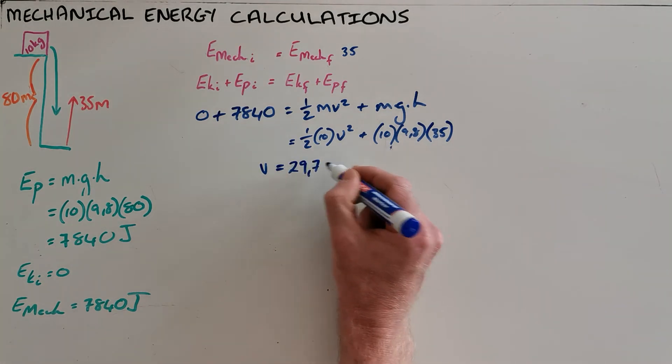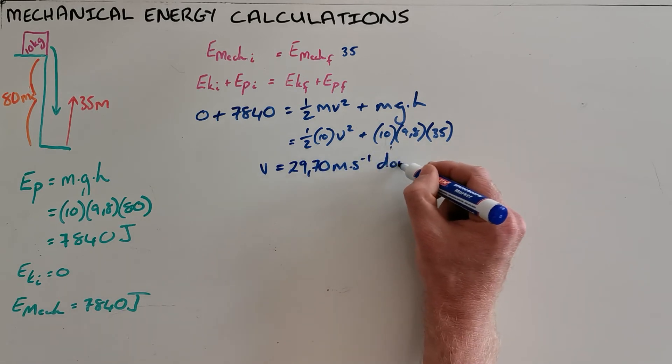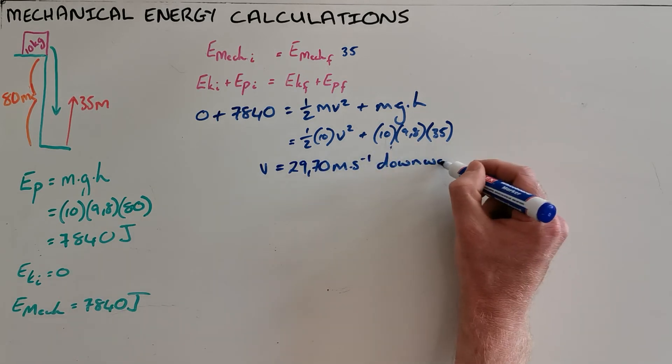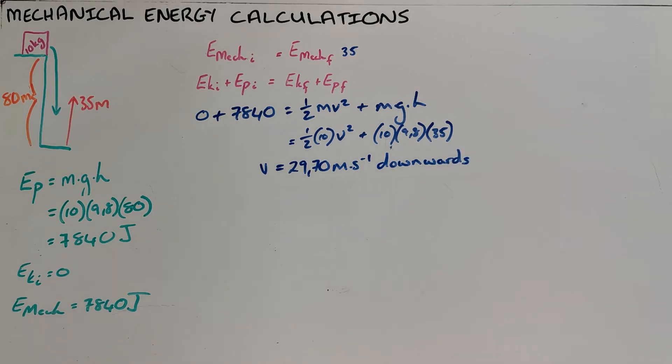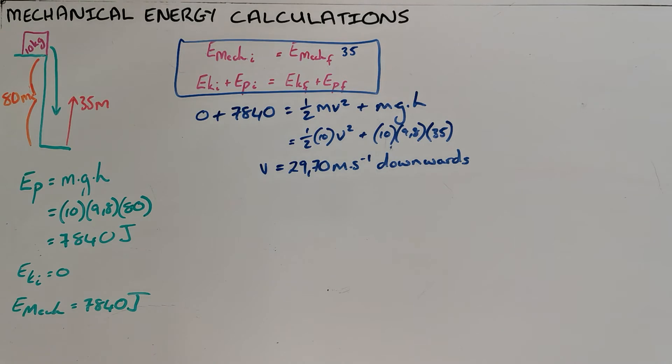The velocity at a distance 35 meters above the ground is 29.70 meters per second, and that is obviously downwards. We can also then calculate the final velocity of this object before it hits the ground. We would use these same first two lines.